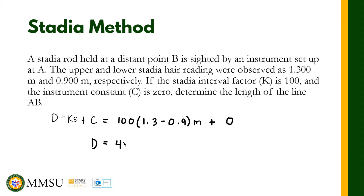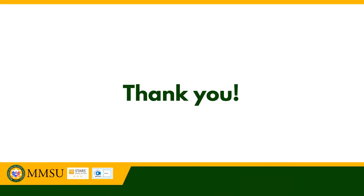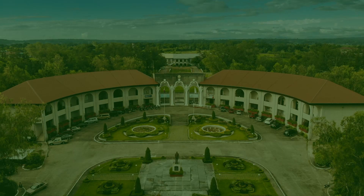The answer is 40.0 meters. So that is the distance of the line from point A to point B using the stadia method. Thank you so much.